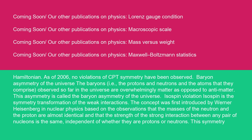Baryon asymmetry of the universe. The baryons, i.e., the protons and neutrons and the atoms that they comprise, observed so far in the universe are overwhelmingly matter as opposed to antimatter. This asymmetry is called the baryon asymmetry of the universe.